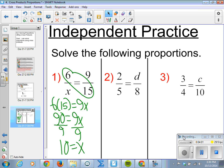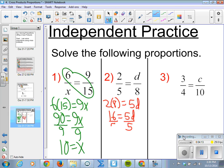2 fifths equals d over 8. So, 2 times 8 equals 5d. 16 equals 5d. Divide both sides by 5. It's a one-step equation. And I'm going to leave it at 16 fifths equals d. Or you can always have 3 and 2 tenths equals d. Either form is fine by me.